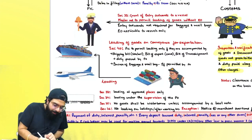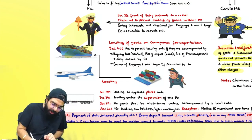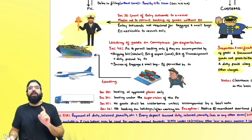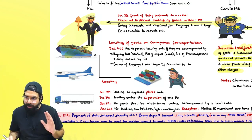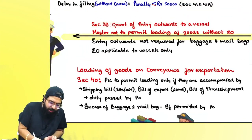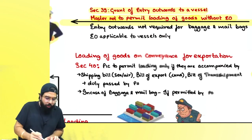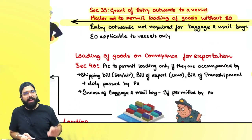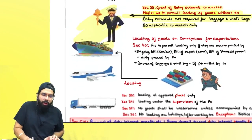The master of the ship must take permission from the proper officer — only in case of vessel — which is known as entry outward under section 39. Grant of entry outward to vessel: master not to permit loading of goods without entry outward. Entry outward is not required for baggage and mail bags, and entry outward is only applicable to vessels.